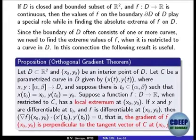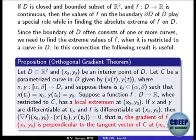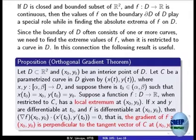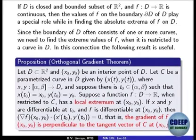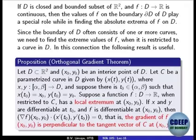Now here is the Orthogonal Gradient Theorem. Suppose you have an interior point (x₀, y₀) of the domain, and C is a parameterized curve in D. The curve passes through (x₀, y₀), meaning there is a parameter value t₀ with x(t₀) = x₀, y(t₀) = y₀. The theorem says: if the function f, when restricted to C, has a local extremum at (x₀, y₀), then the gradient of f at that point is perpendicular to the tangent vector to the curve at that point.